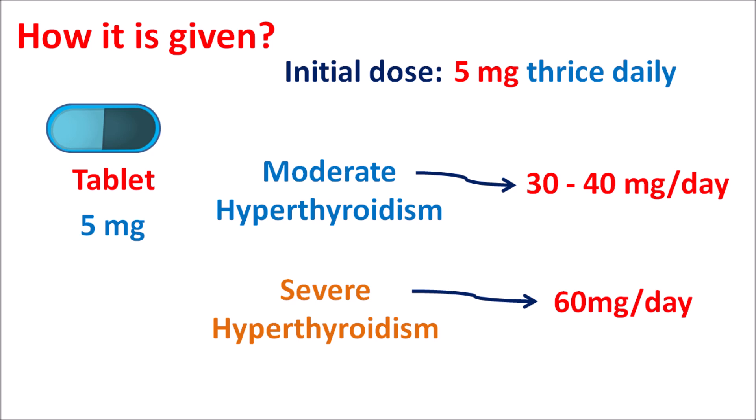In summary, methimazole is a thioamide used as an anti-thyroid agent to control symptoms of hyperthyroidism, including management of Graves' disease and toxic multinodular goiter. It can also be used as an adjuvant in radioiodine therapy. Development of agranulocytosis is a key precaution, and the drug is not preferred in pregnant women as it can produce fetal damage, reduce organogenesis, cause fetal malformations, fetal goiter, and cretinism.